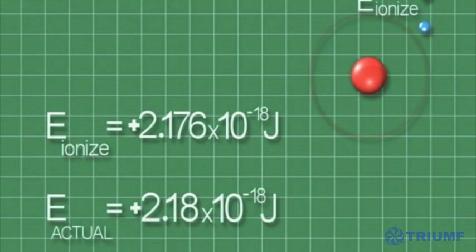The actual ionization energy is 2.18 times 10 to the minus 18 joules. So our calculation, using Newton's and Coulomb's law, is very close.